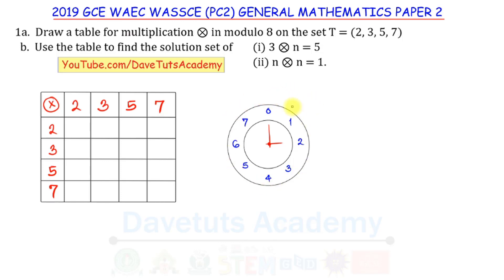With a 12-hour clock, you can say 13 hours or 1 o'clock, 14 hours or 2 o'clock, 15 hours or 3 o'clock. The same principle applies here: on our modulo 8 clock we have 0 to 7, and after 7 we round back to 0 instead of reaching 8.